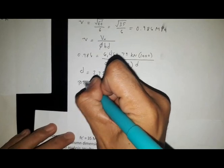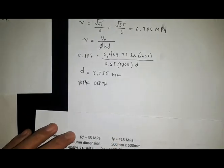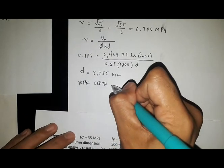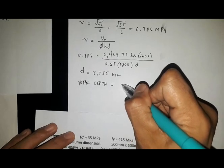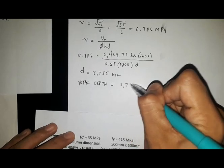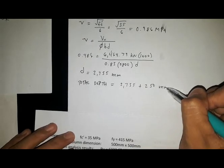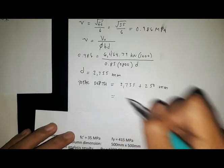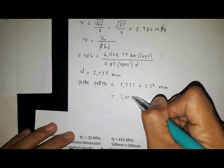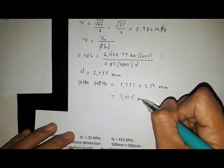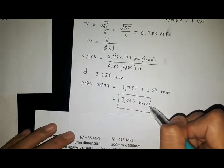The total depth equals 2755 plus 250 millimeters, which equals 3005 millimeters. That is the value of depth for critical beam shear.